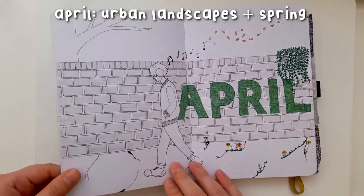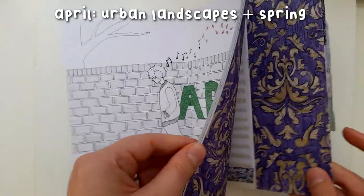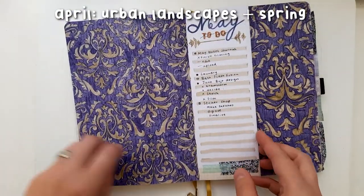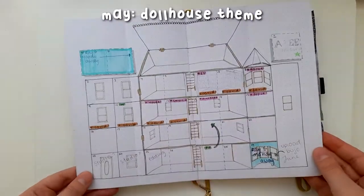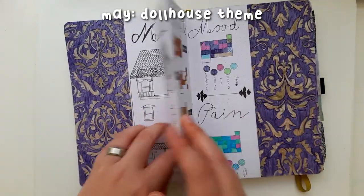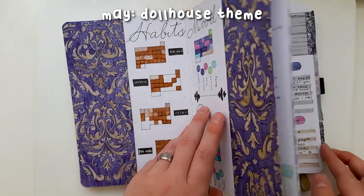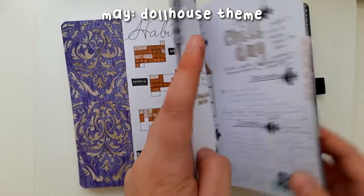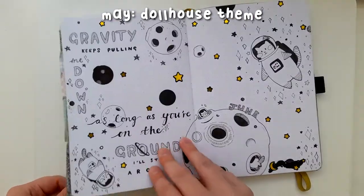In April I did an urban spring theme. I don't really know how to describe this one well, but basically I did cityscapes combining with the arrival of spring. May I did a Doll's House theme. Again I didn't get to show you this one because I got Covid and then I had a crisis of confidence, so I didn't end up uploading that one. But I am still really proud of how it came out, particularly the Dutch door cover that I made.